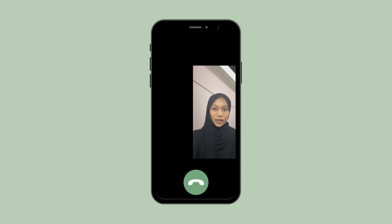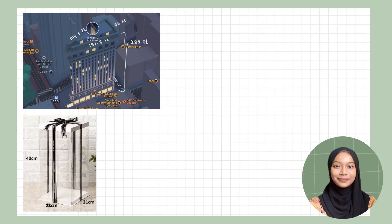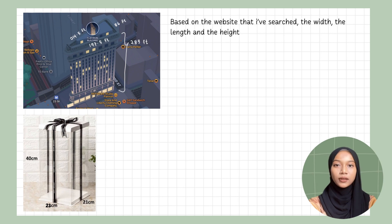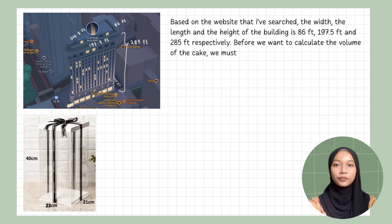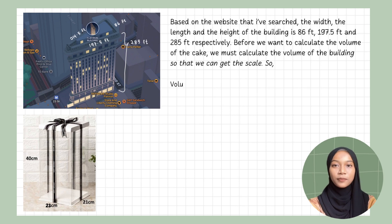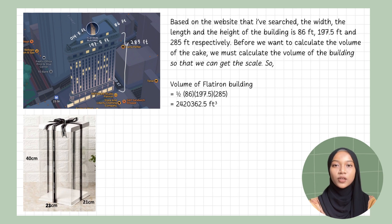Shaq: I have decided. Let me explain the dimensions of the cake box. Based on the website I searched, the width, length, and height of the Flatiron Building are 86 feet, 197.5 feet, and 285 feet respectively. Before we calculate the volume of the cake, we must calculate the volume of the building to get the scale. Volume of the Flatiron Building equals one-half times 86 times 197.5 times 285, which equals 2,420,362.5 cubic feet.